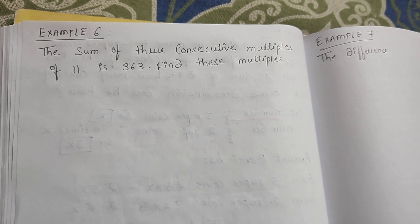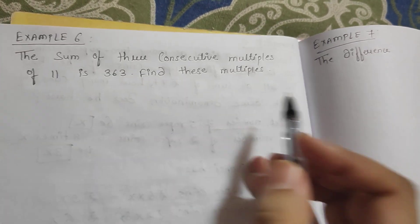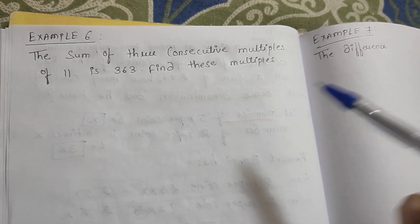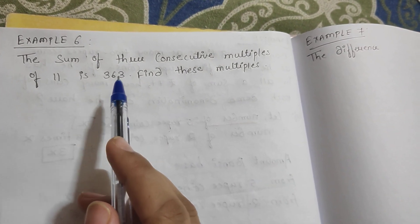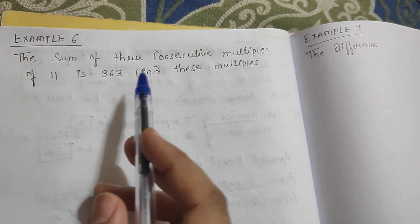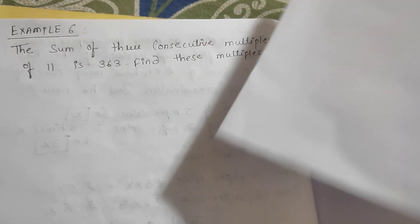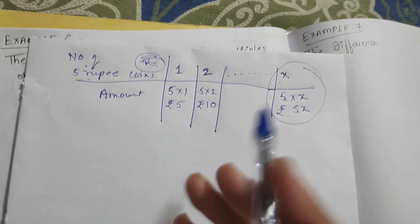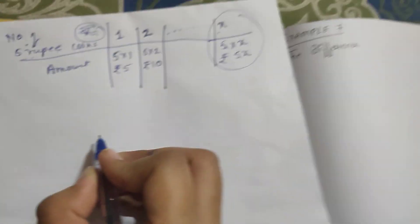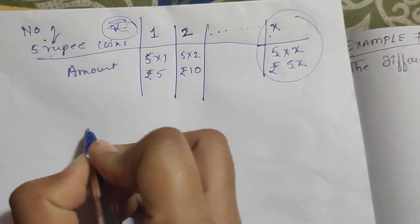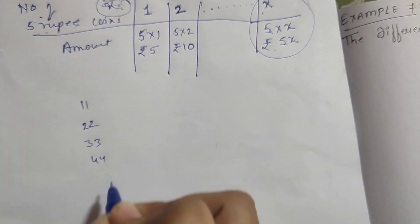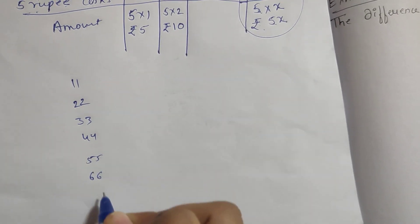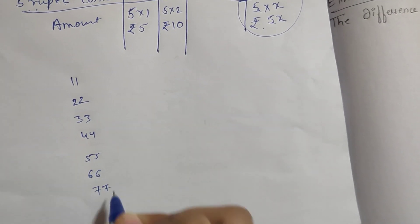Now let's move to Example 6. The sum of three consecutive multiples of 11 is 363. Multiples of 11 are 11, 22, 33, 44, 55, and so on.